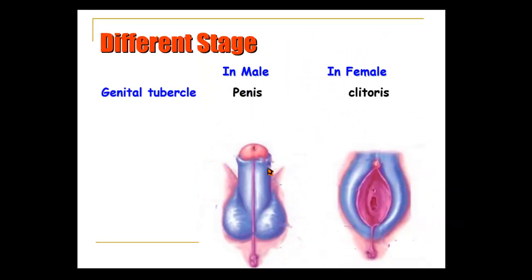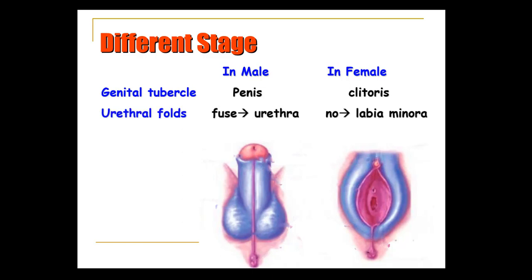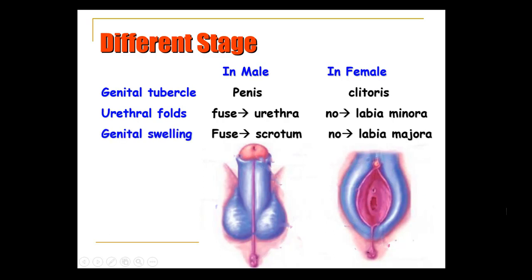The genital tubercle will grow and form the penis in males, while in females it remains small and forms the clitoris. The two urethral folds in males will fuse and form the male or penile urethra — you can see the suture line representing the fusion. In females, they do not fuse, remain separated, and form the labia minora, inside which is the opening of the urethra and the vaginal opening. The genital swellings fuse in males to form the scrotum, while in females they remain separated and form the labia majora.